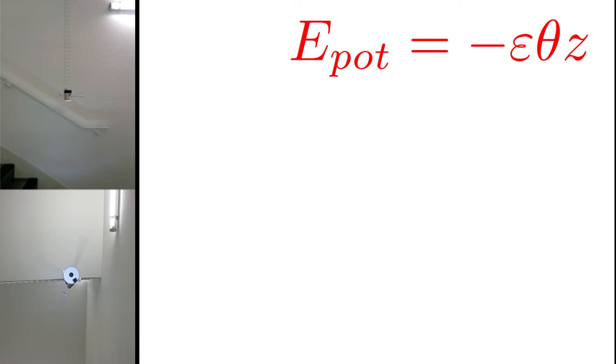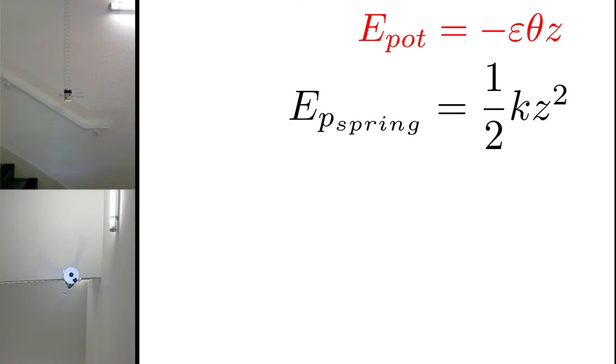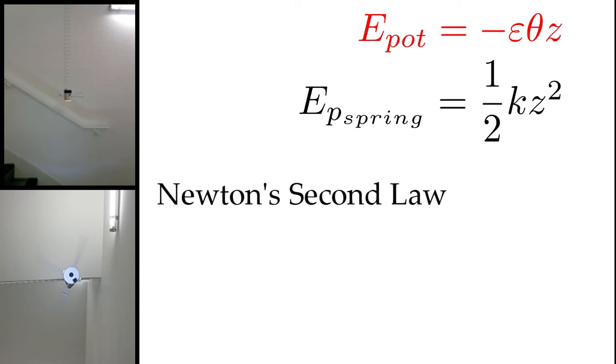There is a clear link between the rotation by the angle theta and the translation, set for z. The other potential energy comes from the spring. It's the elastic potential energy. K is the spring constant.